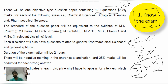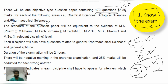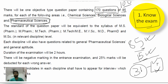The weightage of 170 questions is 85 marks. If you are a student of Pharmaceutics, your discipline will be Pharmaceutical Science. There are three areas on which the exam is conducted: the first is Chemical Science, the second is Biological Science, and the third is Pharmaceutical Science.